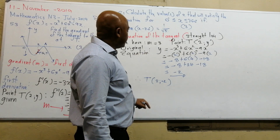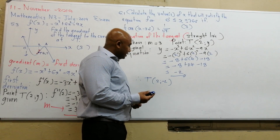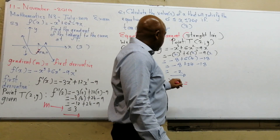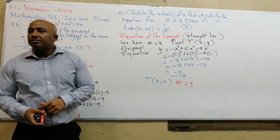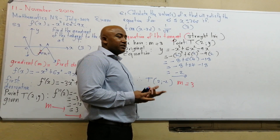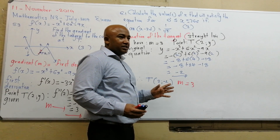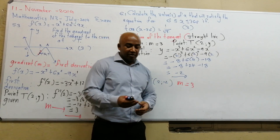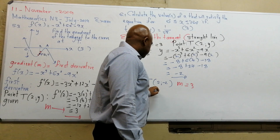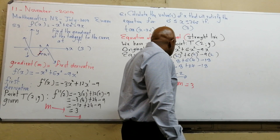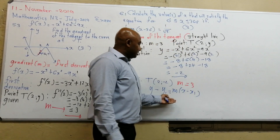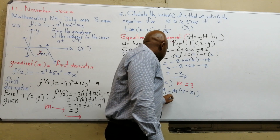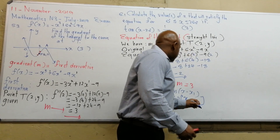Now we can find the equation of the tangent. We have point T at (2, minus 2) and gradient m equals 3. Since we have a point and a gradient, we use the point-gradient form: y minus y1 equals m times (x minus x1). This formula lets us substitute all the information at once.